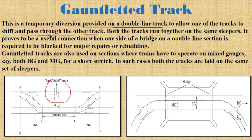In a gauntlet track, both tracks run together and share the same sleeper, making a usable connection. It is used when one side of a bridge on a double line section needs to be blocked for major repairs or rebuilding. Gauntlet tracks are also used in sections where trains operate on mixed gauges.